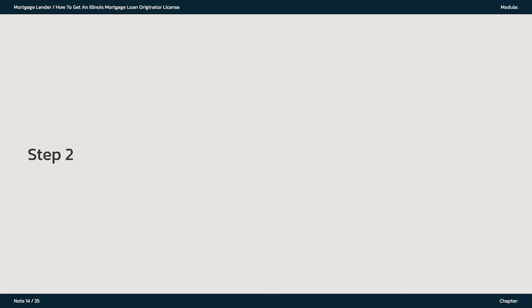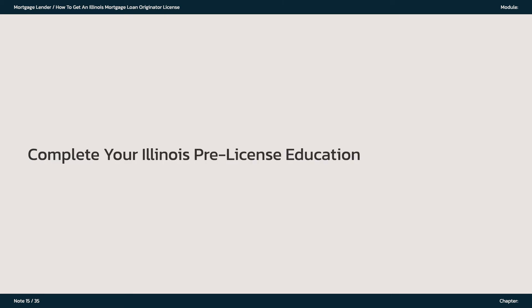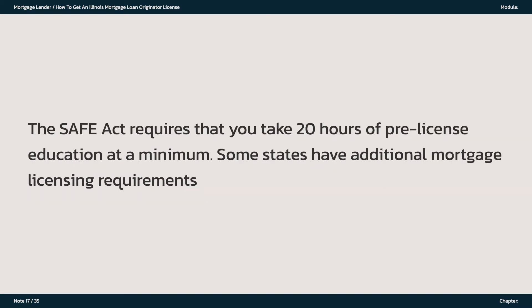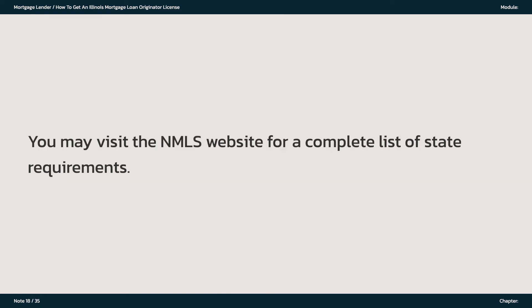Step 2: Complete your Illinois Pre-License Education. Before you can get your Illinois Mortgage License, you need to take required pre-license courses. These help you learn mortgage laws and procedures. Each state has different mortgage education requirements. If you work for a non-bank institution, a mortgage company, you must get licensed in each state that you want to do business in. The SAFE Act requires that you take 20 hours of pre-license education at a minimum. Some states have additional mortgage licensing requirements. You may visit the NMLS website for a complete list of state requirements.